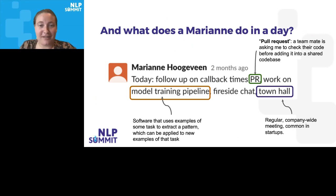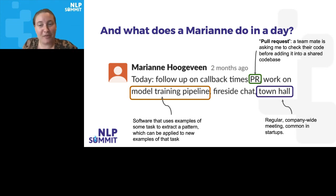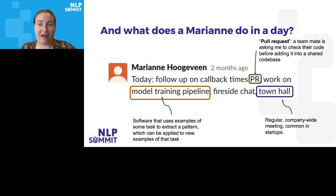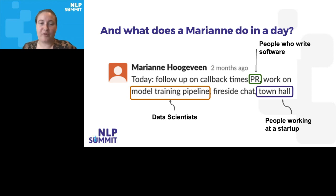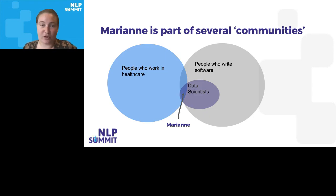There's work that Marianne has to do. For example, a couple of months ago I shared this update with my team: follow up on callback times, PR, work on model training pipeline, fire chat, town hall. Most of you will probably know most of these words, but for the regular person there might be something to unpack here. PR probably means a pull request. Model training pipeline you also know, but others might need explanation. Town halls are very common especially in startups. So you can see there are three groups of people that tend to use these words — I'm a part of several communities that use certain words, and that's what I want to talk about in this talk.